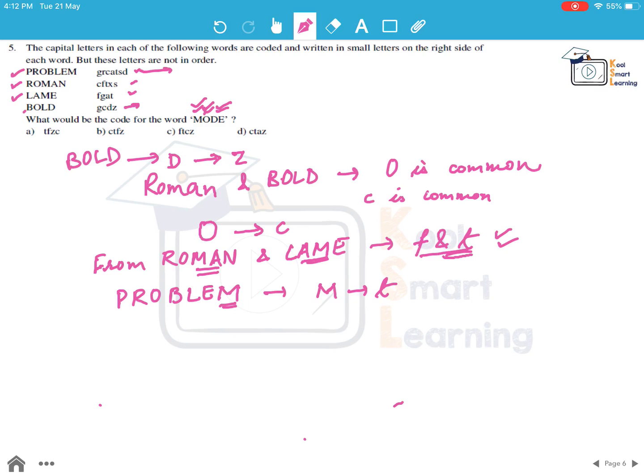Now we look at lame and bold. What is common here? We have L is common here. And the only common alphabet in the coded word for these is G. So that means L stands for G. Now if we look at lame, we know that A stands for F now. M for T. L for G. This means that E now is coded as A.